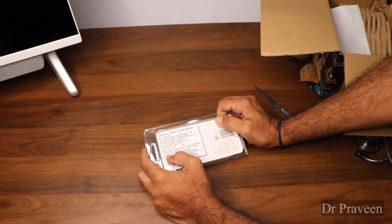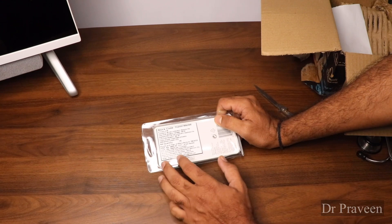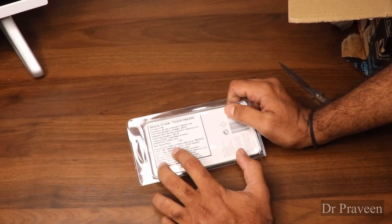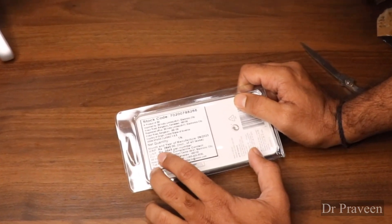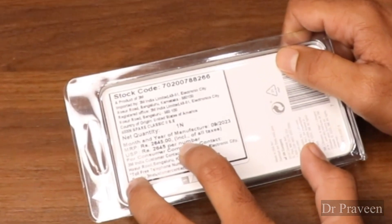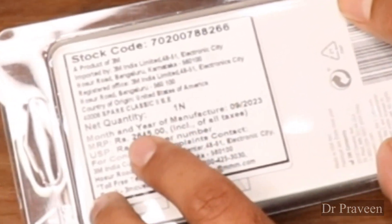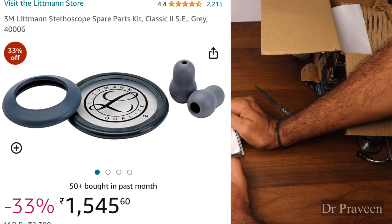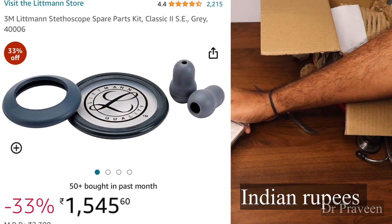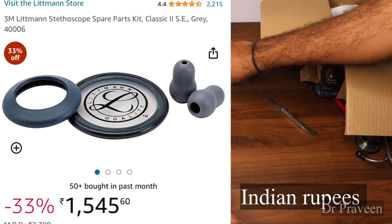Stock code and many details are here. The MRP is 2645, USP is 2645. On Amazon, you may get around 4000 something, 4500, 1600 something like that. Let's open it.